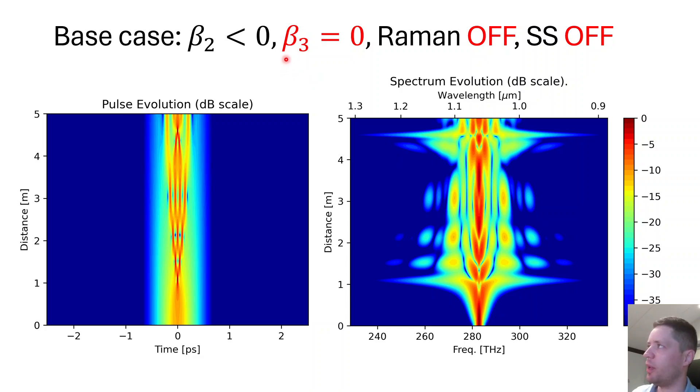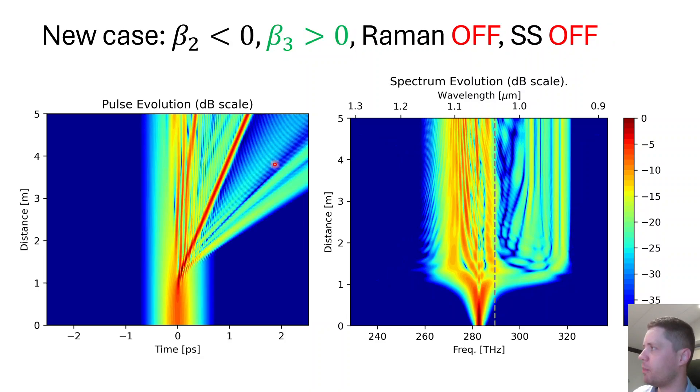Let's see what happens if we change the beta-3 parameter from being zero to now being positive. As we can see, after one meter of propagation this pulse begins to split off from the main one and drift off to later and later time delays.